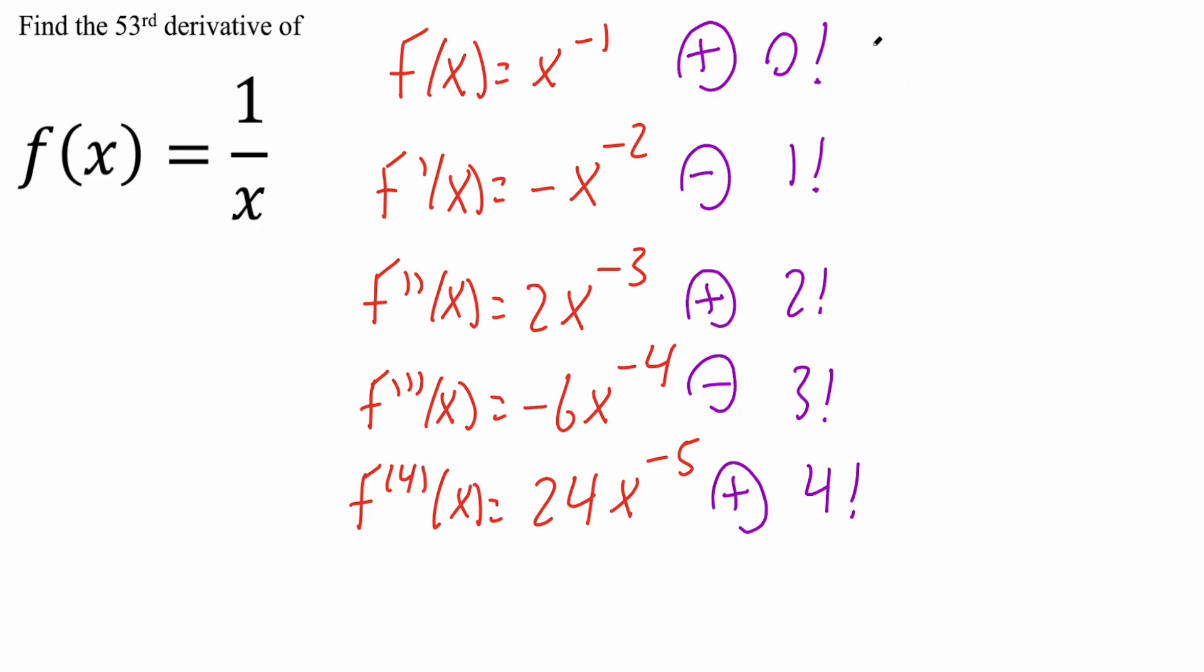And so our answer is going to be, we know it's going to be negative. We know we have the 53rd derivative. So we know it's going to be 53 factorial divided by, so it says x raised to negative 5. That's the same thing as saying we have 24 divided by x raised to positive 5.